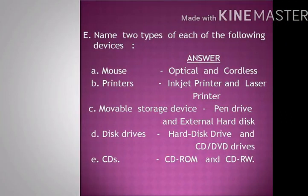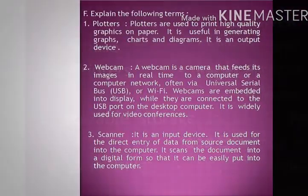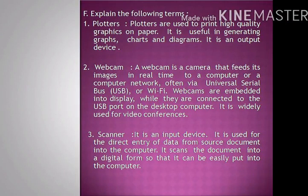Question E: Name two types of each of the following devices. A: Mouse — Optical and Cordless. B: Printers — Inkjet Printer and Laser Printer. C: Movable Storage Device — Pen Drive and External Hard Disk. D: Disk Drives — Hard Disk Drive and CD or DVD Drives. E: CDs — CD-ROM and CD-RW.